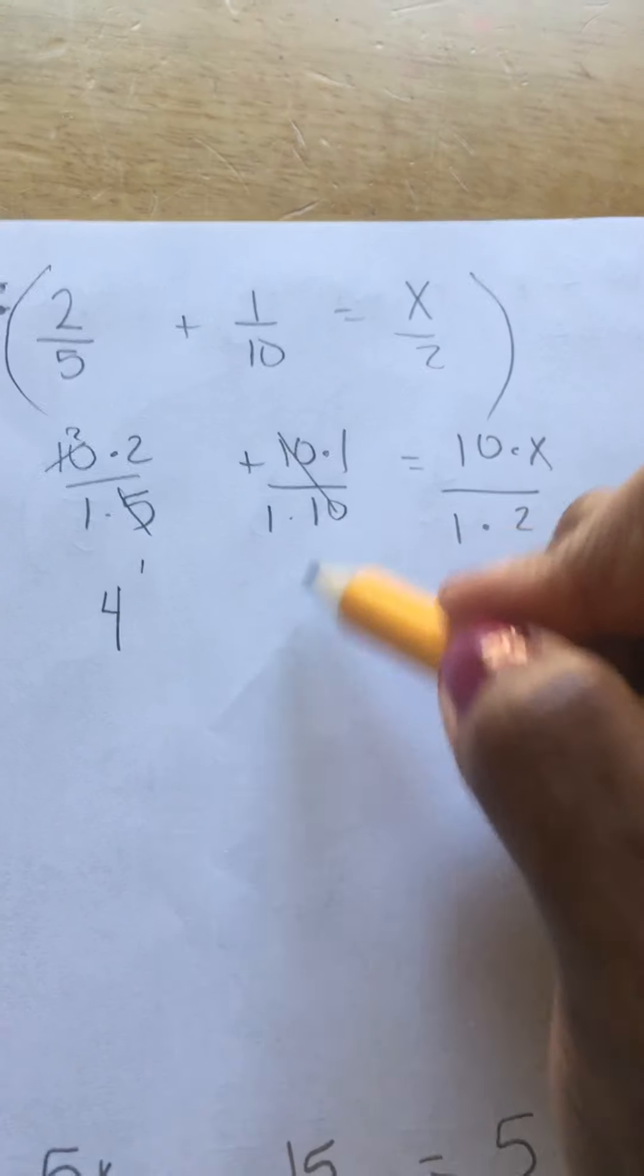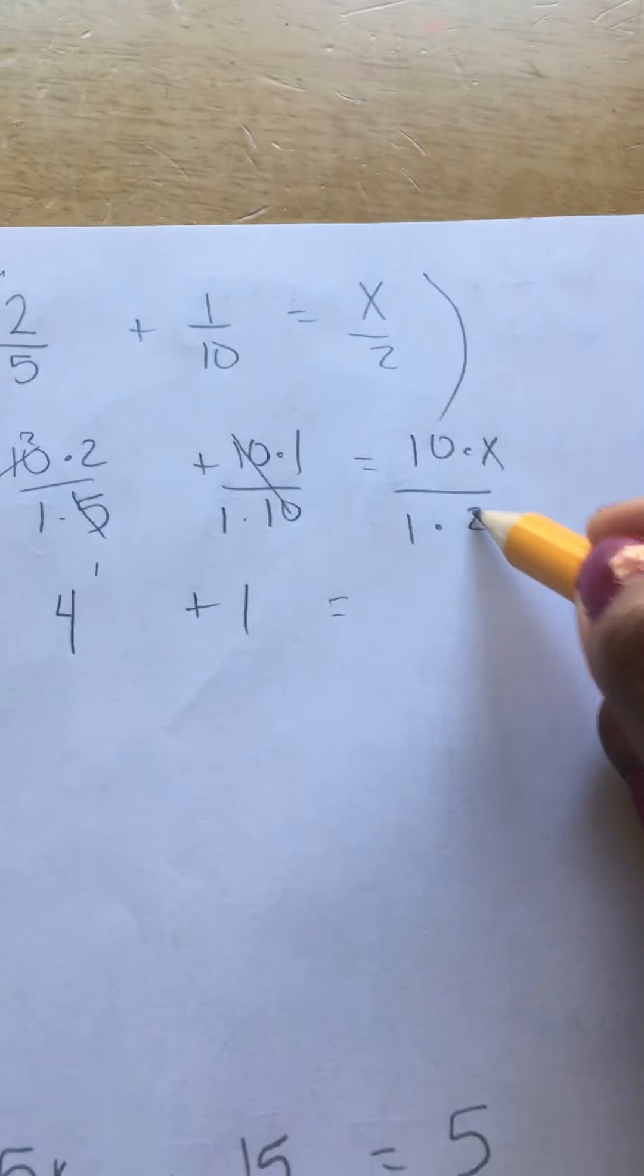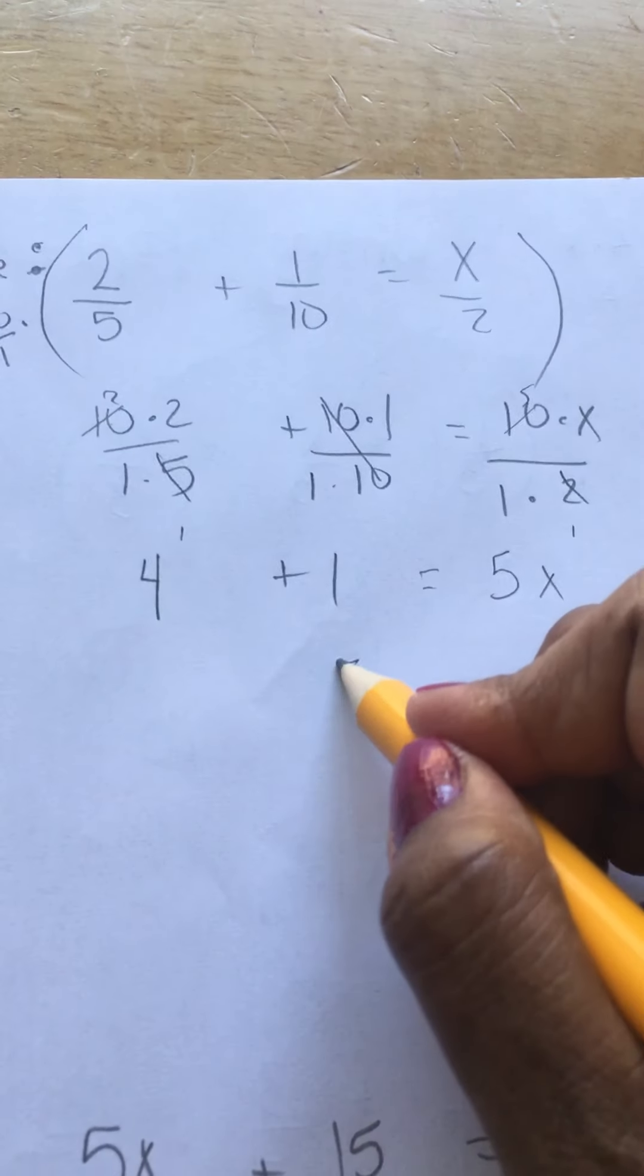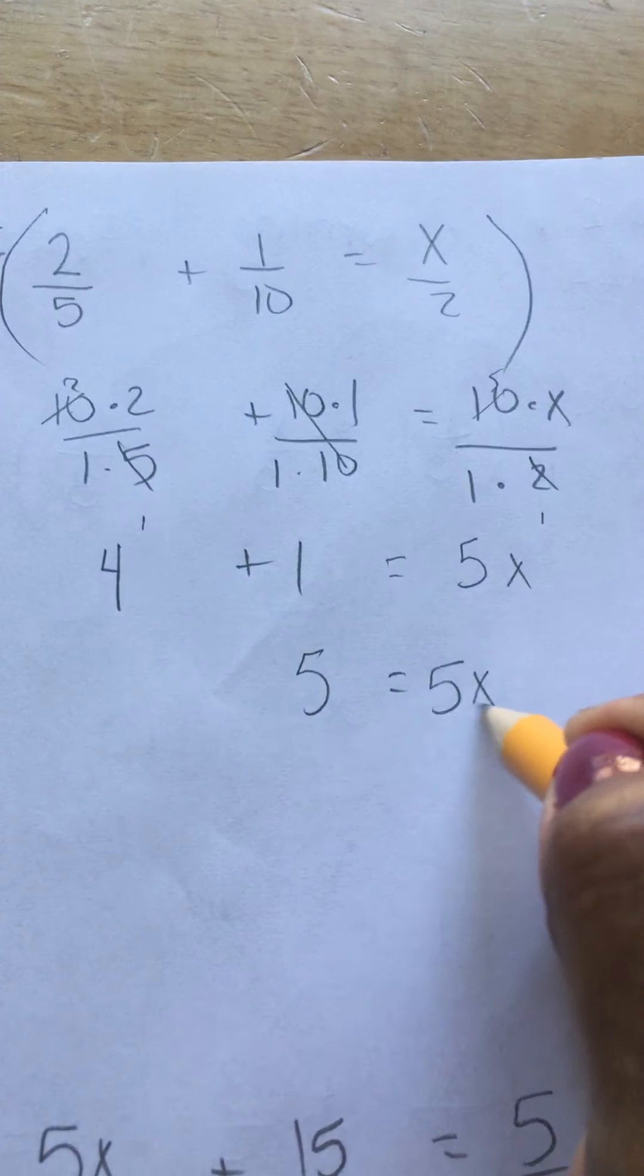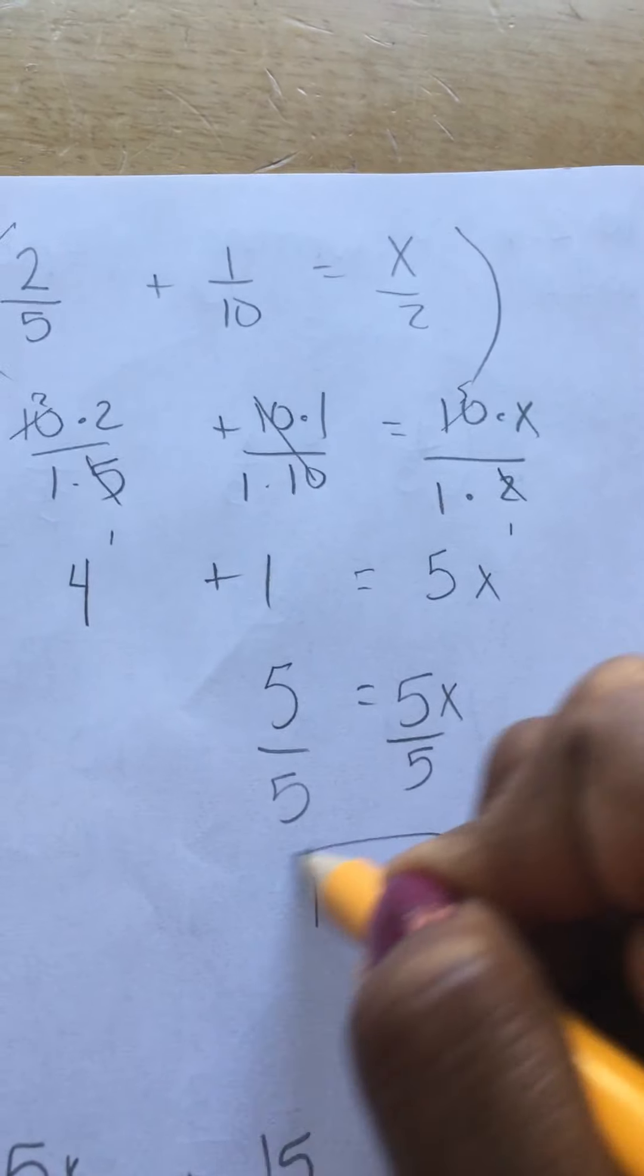The 10s cancel out here and we're left with just 1, never a 0. Over here, 10 could divide by 2. That becomes a 1 and this becomes a 5, so we have 5x there. And we have 5 equals 5x. Divide by 5, divide by 5. 1 equals x. Perfect, that's your answer.